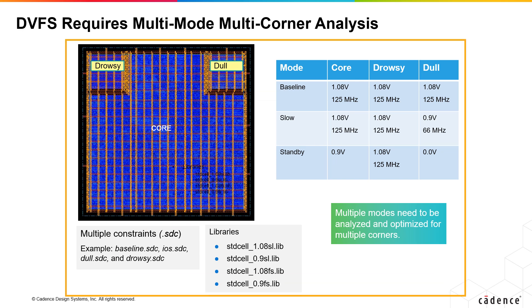As in this example, there are various domains — core, drowsy, and dull — mentioned in the block. You have various modes: baseline, slow, and standby modes, defined for the voltages and frequency of the design.